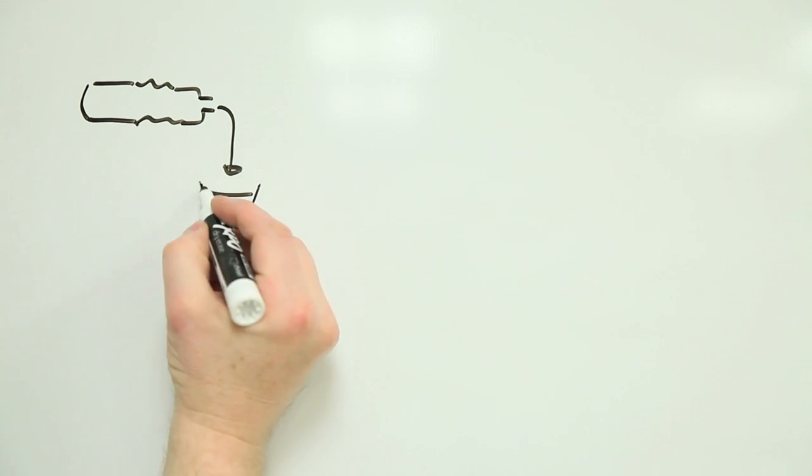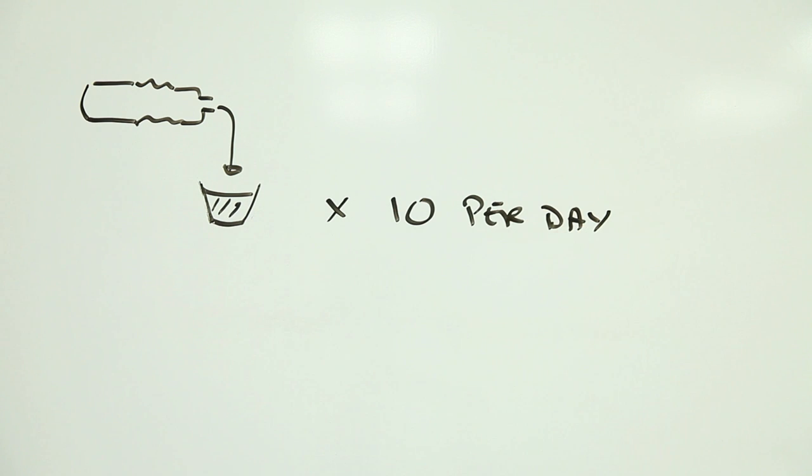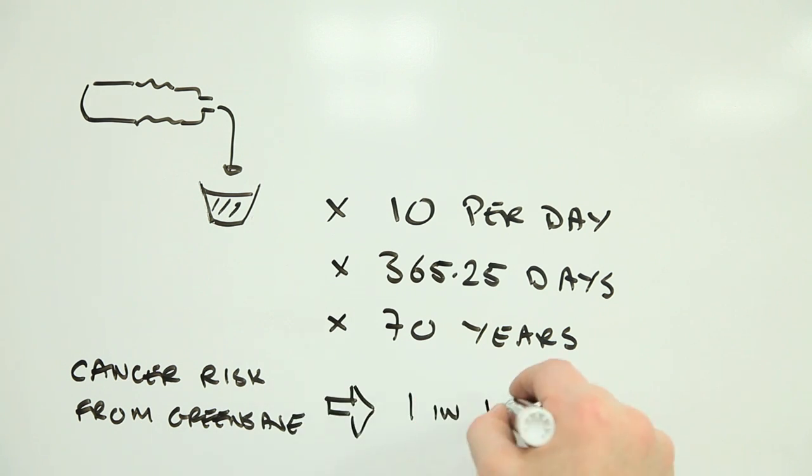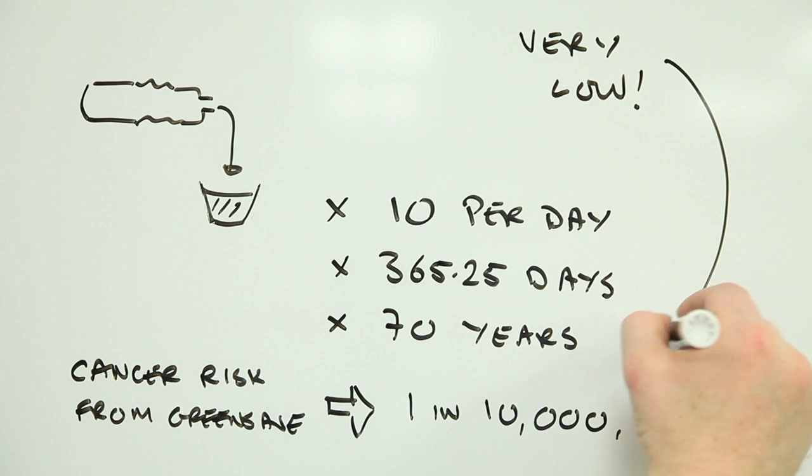Risk assessment shows that if you were to drink 10 Green Save bottles of pop per day for your entire life, your risk of getting cancer would be 1 in 10 million. In other words, the use of Green Save in soft drinks bottles is pretty safe.